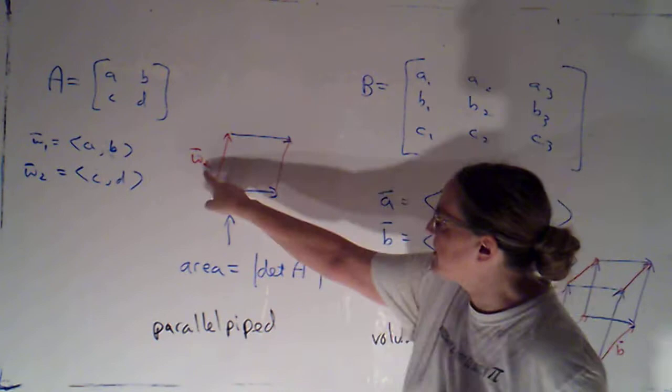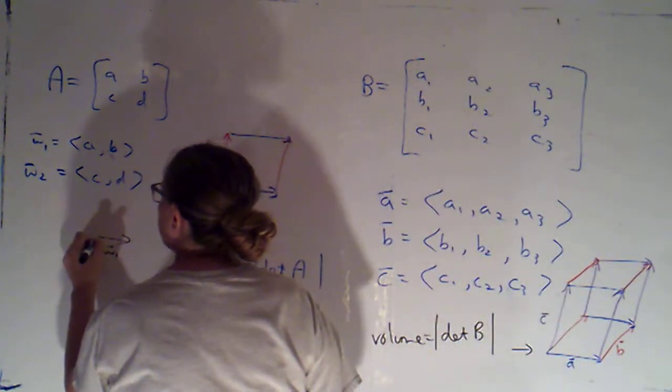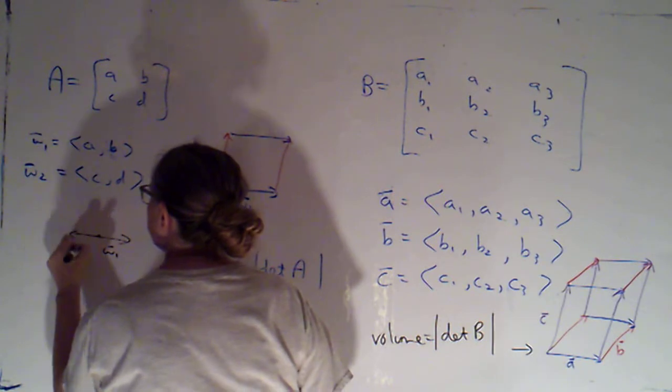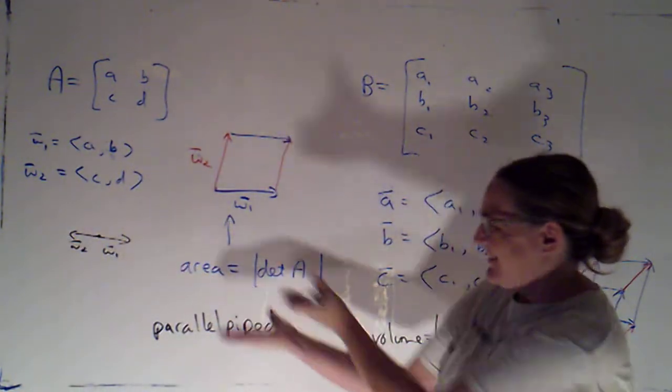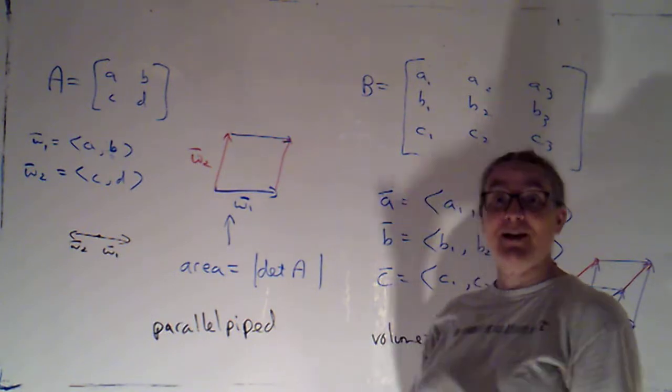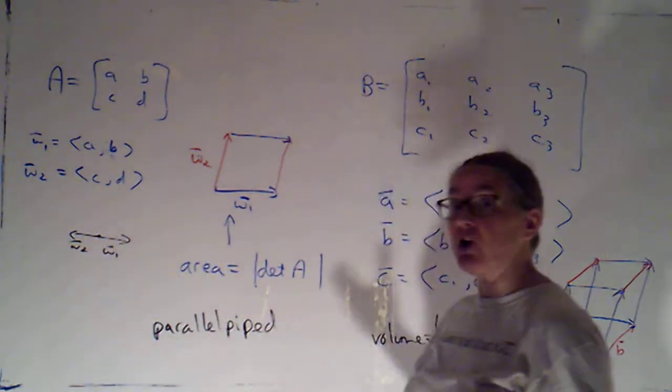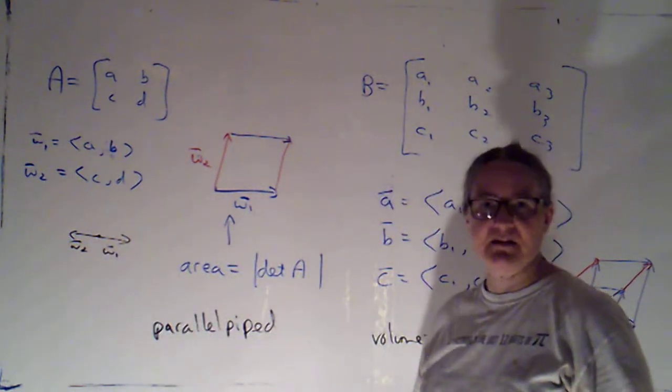So, for the two by two, if my vectors had been parallel, so if I had something like here was w1 and here was w2, well, they don't really form a parallelogram. They would form what we call a degenerate parallelogram because they have zero height. The area would be zero. The determinant of that matrix would be zero.